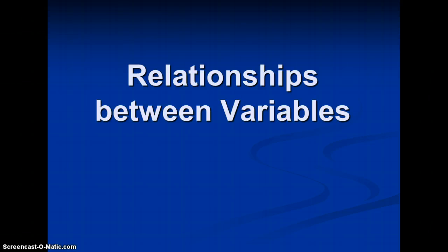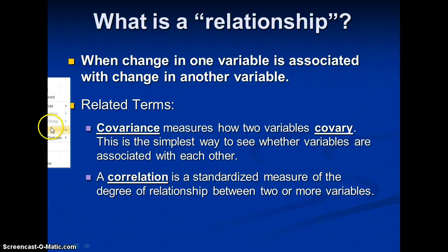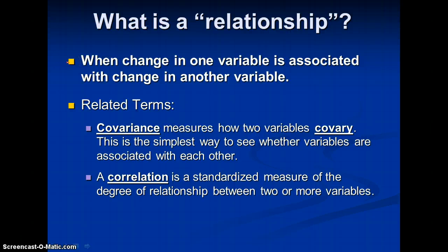How do we think about relationships between variables? That's really the topic for our quantitative section today. What is a relationship? Well, a relationship is when change in one variable is associated with change in another variable. Covariance simply measures how two variables co-vary — how they vary together — and it's the simplest way to see whether variables are associated with each other or not. A correlation is a standardized measure of the degree of relationship between two or more variables.